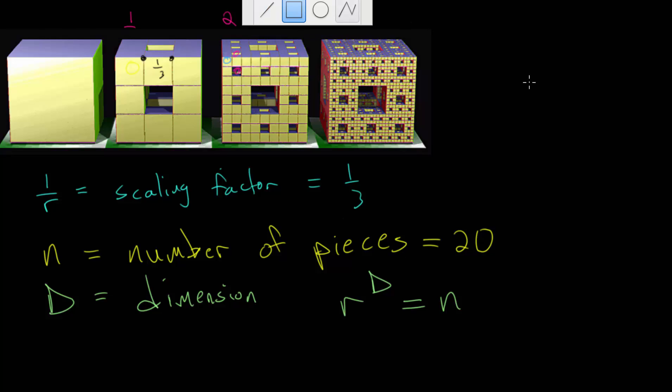But you can verify this equation by looking at something like a square, where we might divide each of these side lengths into one third of the original side length, meaning that our scaling factor is one third. Notice that this would split the square into nine equally sized smaller pieces, where each of these pieces has an area that is one ninth the original area. So in this case, r is three,